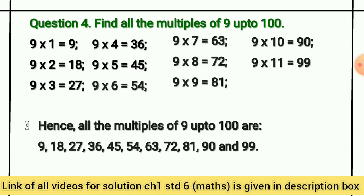All the multiples of 9 up to 100 are 9, 18, 27, 36, 45, 54, 63, 72, 81, 90, and 99.